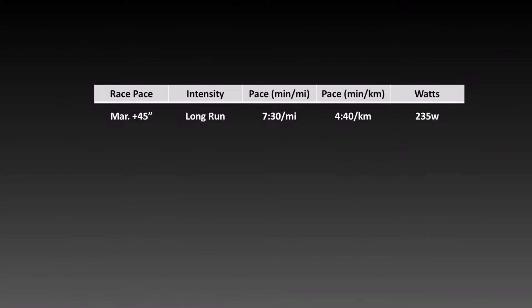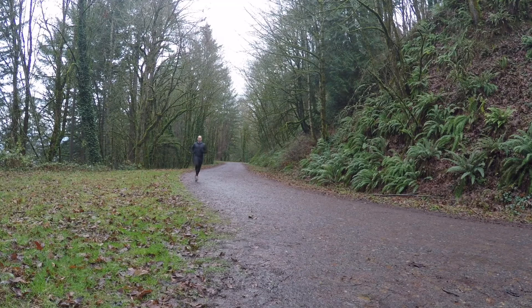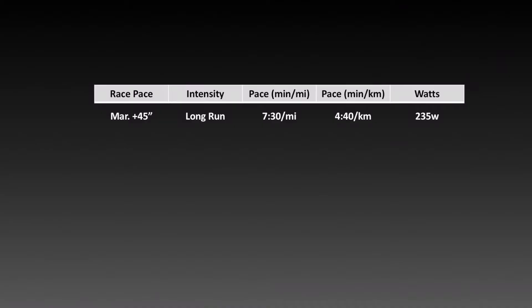The first step was to take a look at recent races and time trials to understand what my power was for certain intensities and use that number for this training cycle. Looking at this chart, for my long runs — which is about marathon pace plus 45 seconds per mile or around 30 seconds per kilometer — that's 7:30 per mile or 4:40 per kilometer, which translates for me to 235 watts.